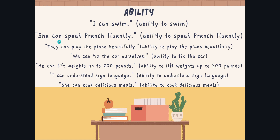Iniciamos con la segunda: 'She can speak French fluently' — tiene la habilidad de hablar francés fluidamente. En la siguiente oración: 'They can play the piano beautifully' — tiene la habilidad de tocar el piano hermosamente. Or: 'We can fix the car ourselves' — podemos arreglar el auto nosotros mismos. 'He can lift weights up to 200 pounds.' Or: 'I can understand sign language' — puedo entender lenguaje de señas. 'She can cook delicious meals' — ella puede cocinar comidas deliciosas.